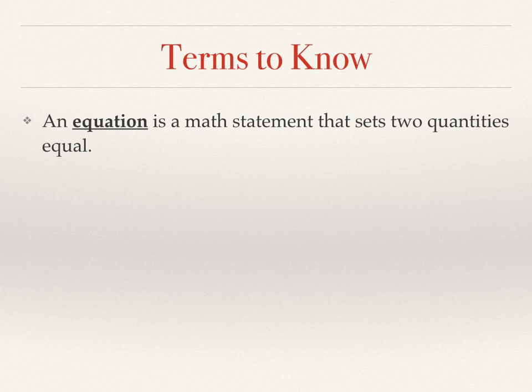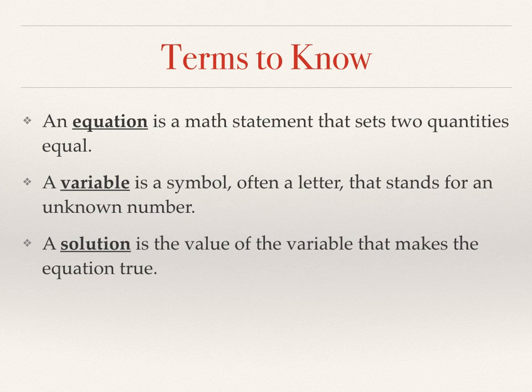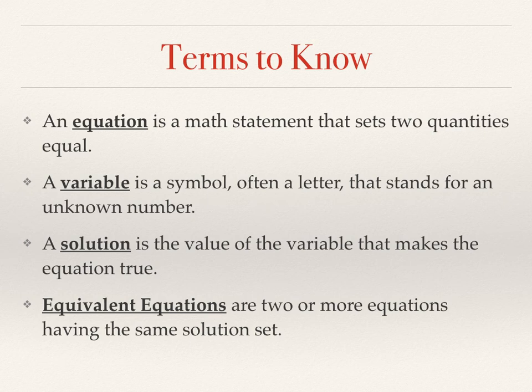Equation: a math statement that sets two quantities equal. A variable is a symbol, often a letter, that stands for an unknown number. A solution is the value of the variable that makes the equation true. And equivalent equations are two or more equations having the same solution set.